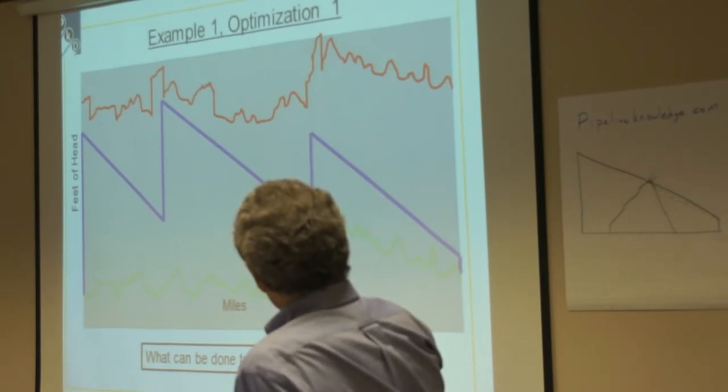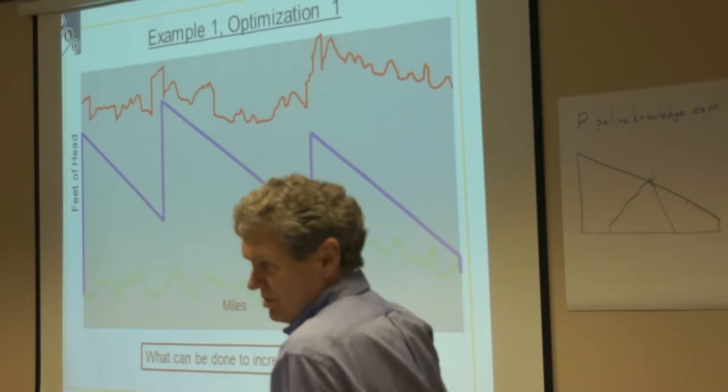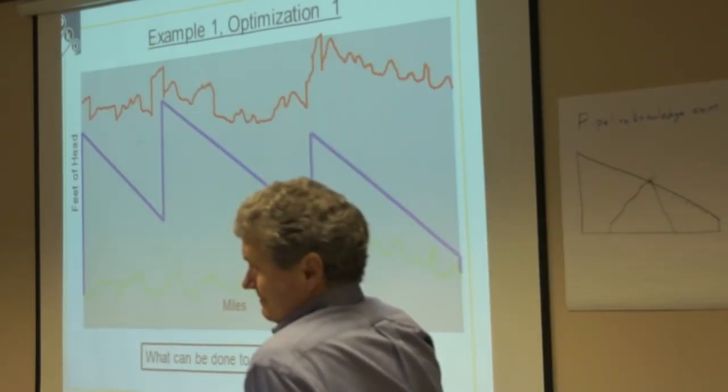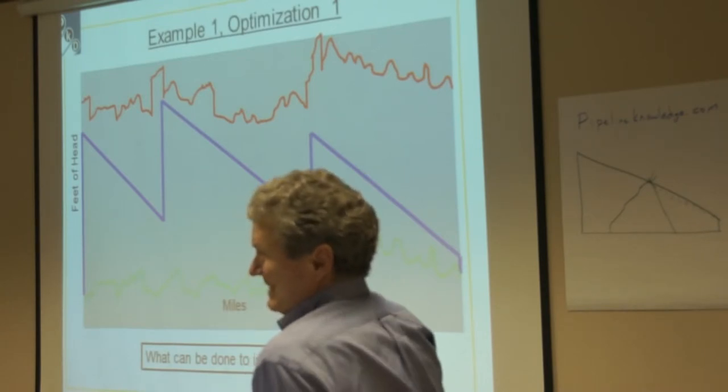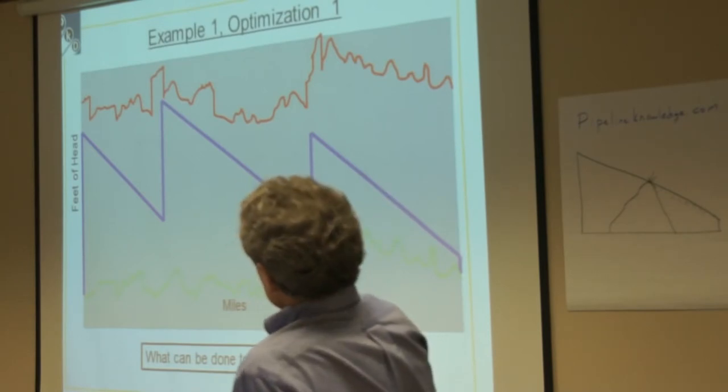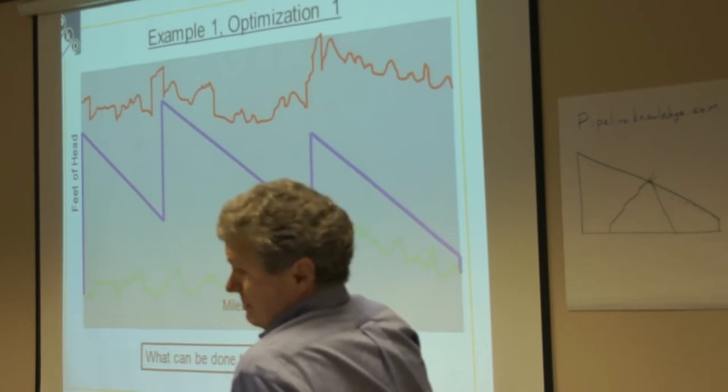So you've dropped it down. What can you do here if you want to increase your rate? You want these to get steeper. Take two or three minutes to think about that. What do you think?